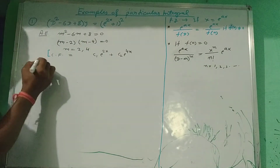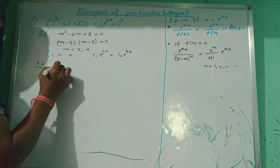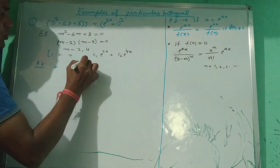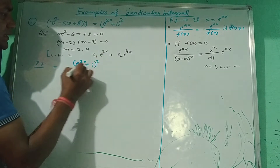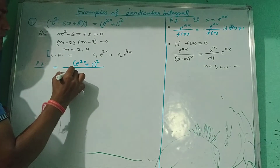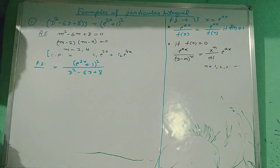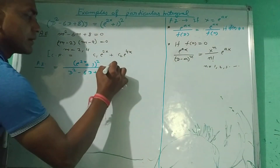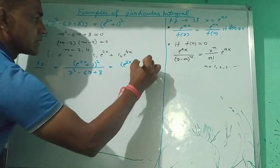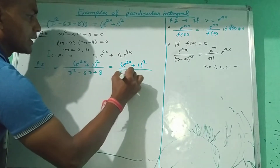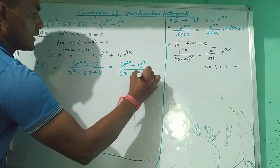Now, the second part is the particular integral. For finding the particular integral, we can write this question in the form of e^(2x) plus 1, which is the right hand side part, upon the denominator part D squared minus 6D plus 8. The factor of the denominator is D minus 2 and D minus 4.